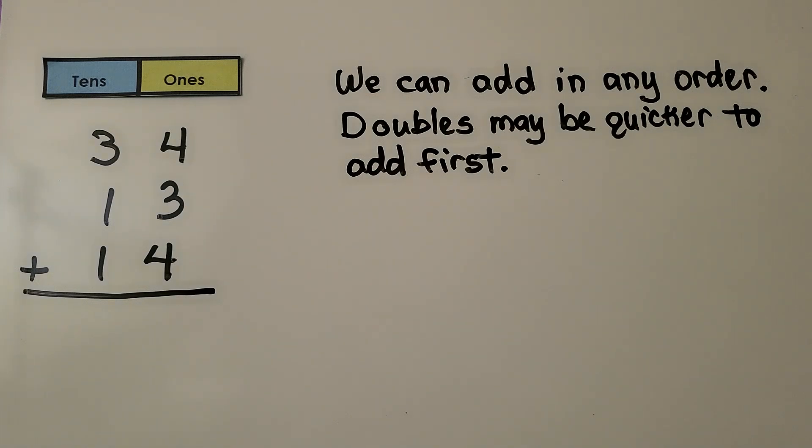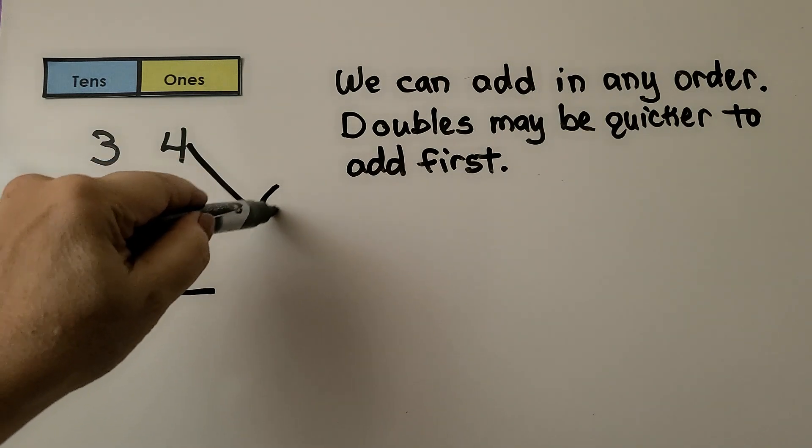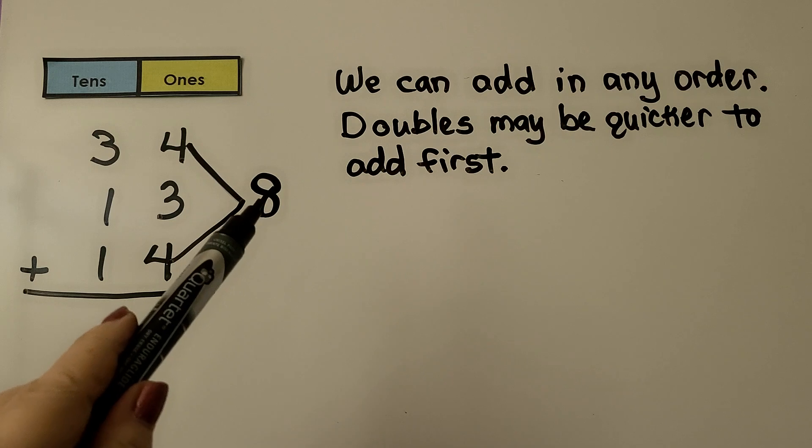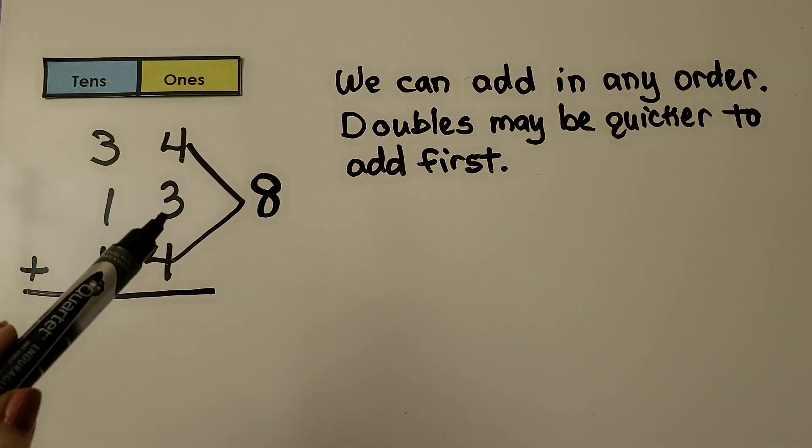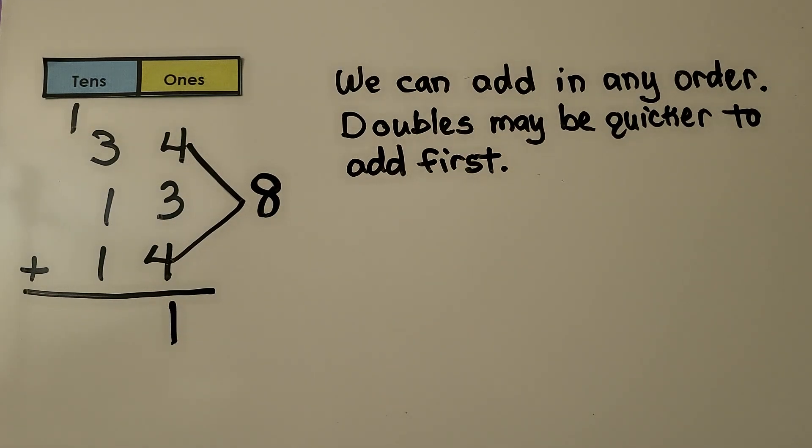And we can add in any order. Doubles may be quicker to add first. Here I see a 4 plus a 4, that makes 8. Now we have 8 plus 3 more. That's 8, 9, 10, 11. We regroup the 10, put the 1 in the ones place. Now we add the tens column. We have 4, 5, 6. It's equal to 61.